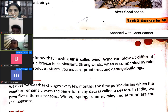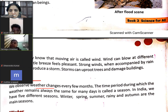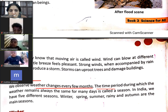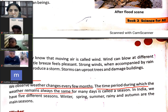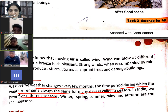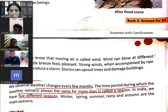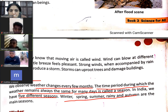Season — there are different seasons. We observe weather change every few months. The time period during which the weather remains the same for many days is called a season. In India, we have five different seasons: winter, spring, summer, rainy, and autumn. These are the main seasons.